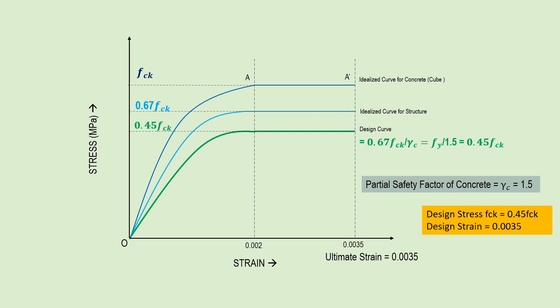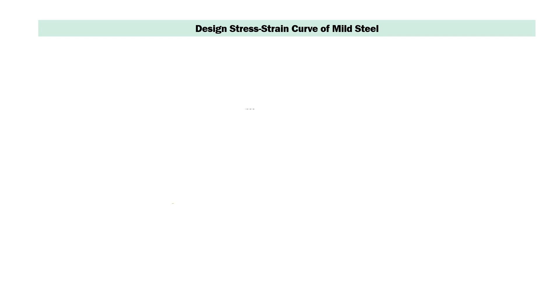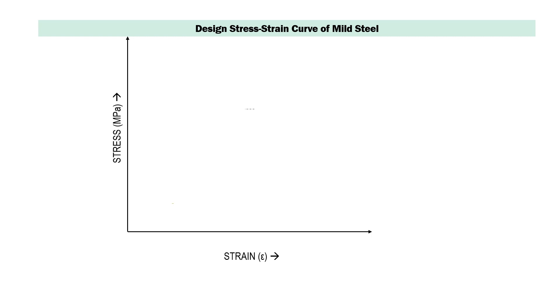Similar to concrete, we need to analyze steel to obtain a standard design stress and design strain value for steel rebar used in concrete structures. Two types of steel are used for reinforced structures: mild steel and HYSD steel. In the case of steel, the yield strength is the characteristic strength, represented by FY. Let's first analyze the mild steel stress-strain curve.